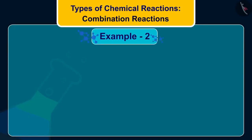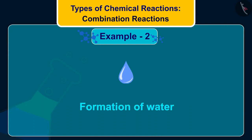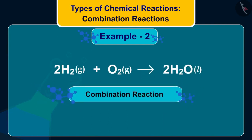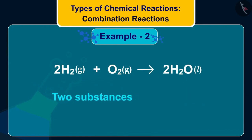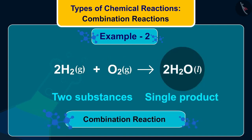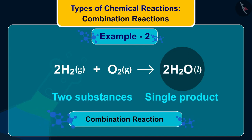Let us discuss one more example of combination reaction: the formation of water. In this reaction, hydrogen and oxygen combine to form water. This reaction is a combination reaction because two substances, that is H₂ (hydrogen) and O₂ (oxygen), together form a single product, H₂O (water). Hence, this reaction is an example of a combination reaction.